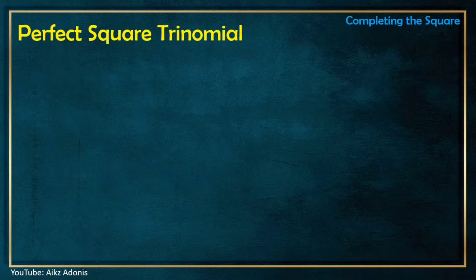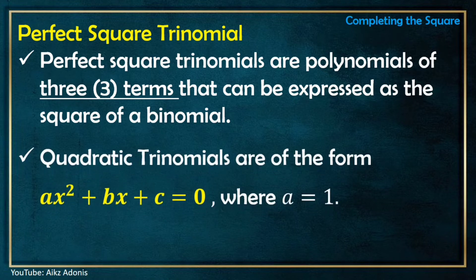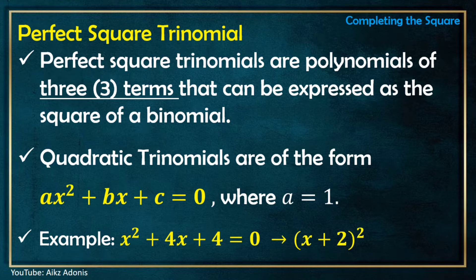By the way, what is a perfect square trinomial? A perfect square trinomial is a polynomial consisting of 3 terms that can be expressed as a square of a binomial. Note that quadratic trinomials are of the form ax² + bx + c = 0 where a = 1. An example is x² + 4x + 4 = 0, which is in that form and can be expressed as the quantity (x + 2)² or (x + 2)(x + 2).